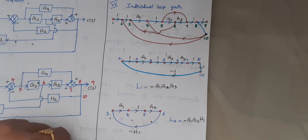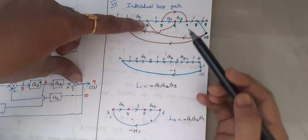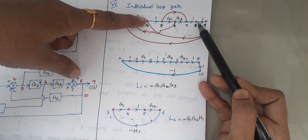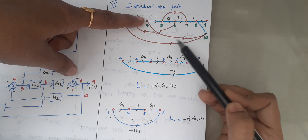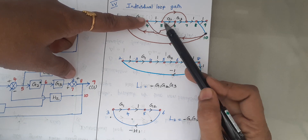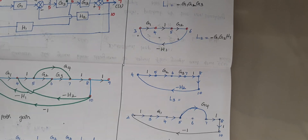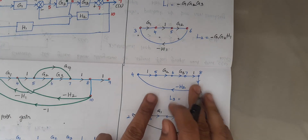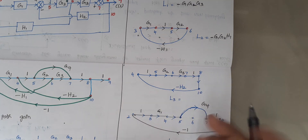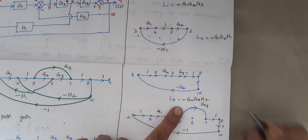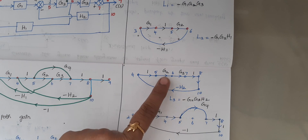The next loop considers nodes 4, 5, 6, 7, 8, then to node 10, and back to 4. The gain is minus G2 G3 H2.